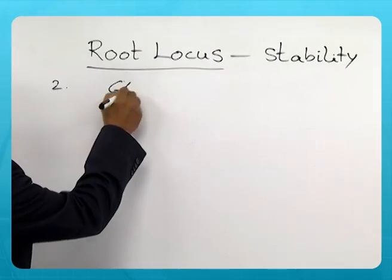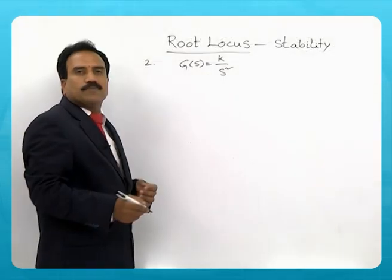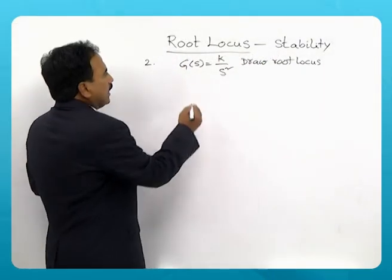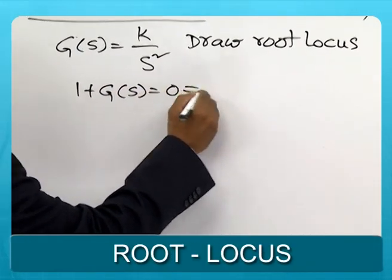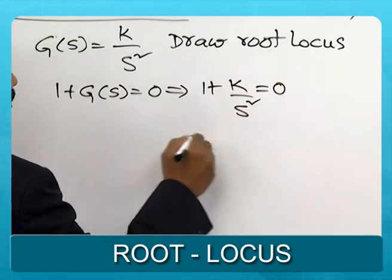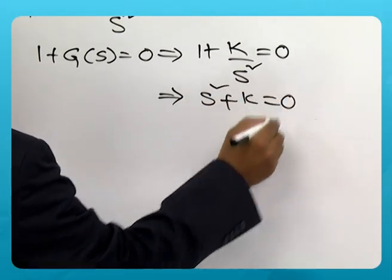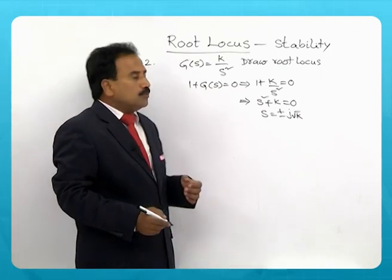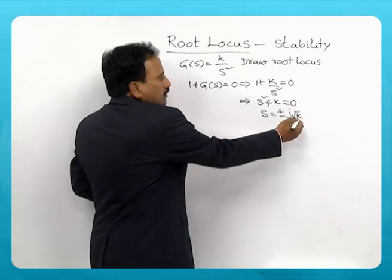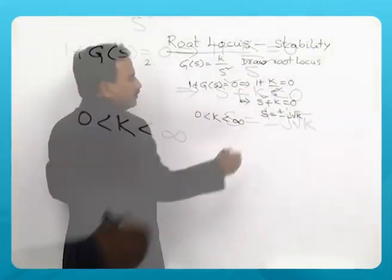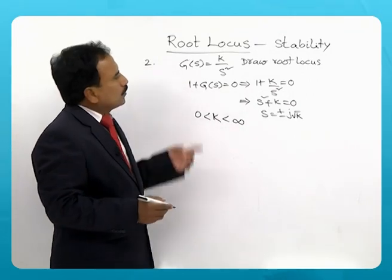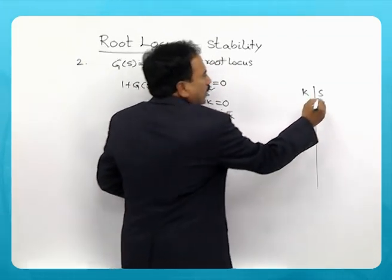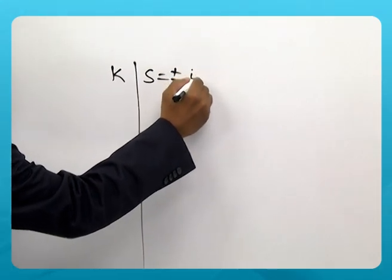Problem 2: G(s) is given by k/s². Draw the root locus. The characteristic equation is 1 + k/s² = 0, giving s² + k = 0. Therefore s = ±j√k. There are two roots. As the value of k changes between 0 and infinity, how these roots move in the s-plane defines the root locus. Starting at k = 0, one root is at +j√k and the other at −j√k.